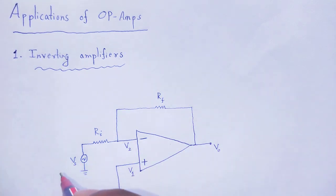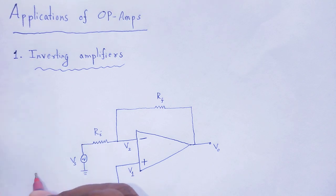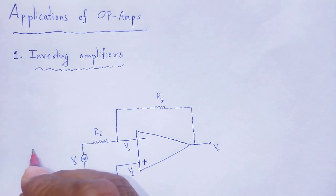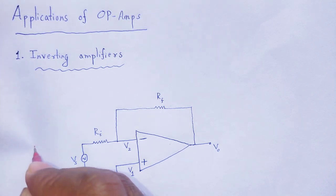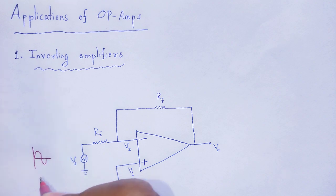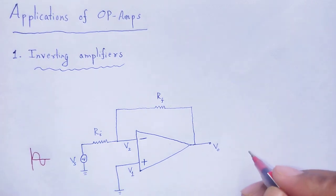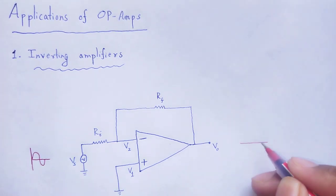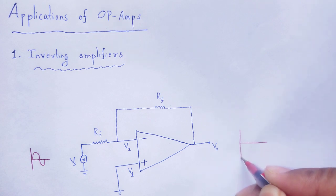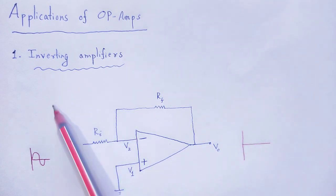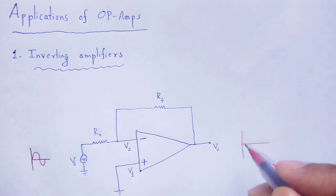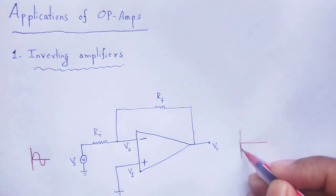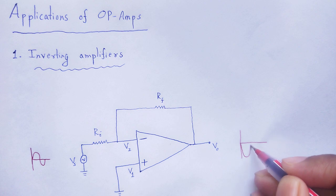If we provide a signal like this, then at output we have the signal that is inverted and amplified, 180 degrees inverted but amplified.